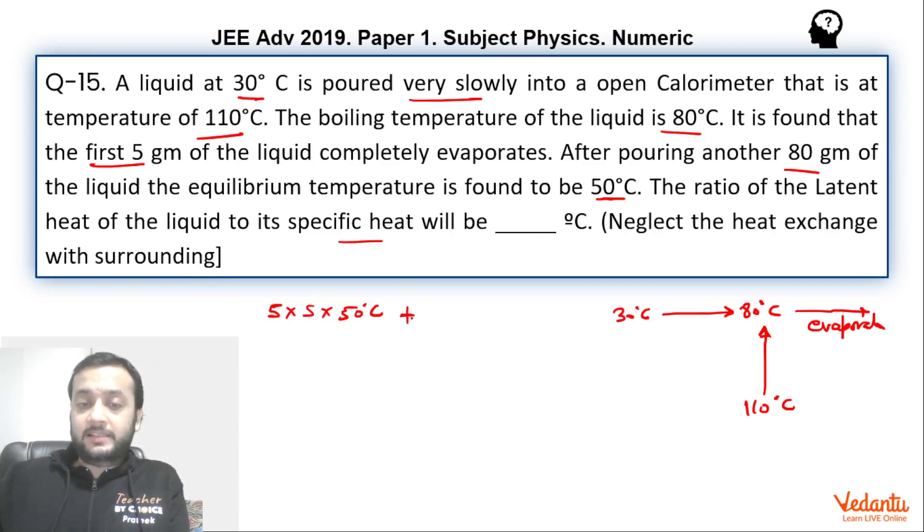Plus it will accept some more heat so that it evaporates which can be written as mL. So 5 into L where L is the latent heat of the liquid. So this is the total heat accepted by the liquid in coming from 30 to 80 and then finally evaporating.